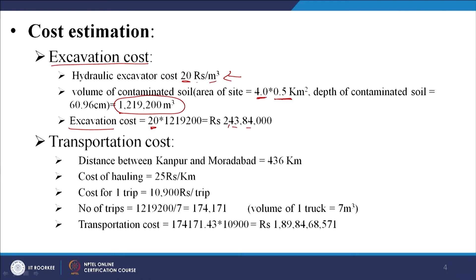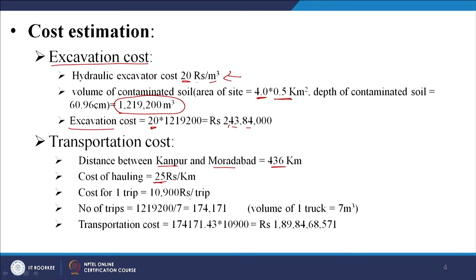The distance between Kanpur and Moradabad from Google Maps is 436 kilometres. Estimating that a lorry transporting soil costs around 25 rupees per kilometre gives a cost of 10,000 rupees per trip. Based on the volume of the truck, the number of trips required results in a total transportation cost of 1,89,84,68,571 rupees. Even if this is a slightly conservative estimate, cutting it by a factor of 10 or even 100 still leaves costs in the range of crores.